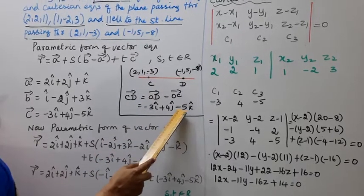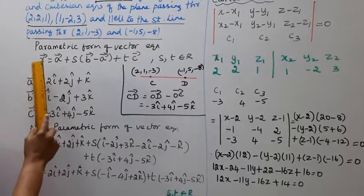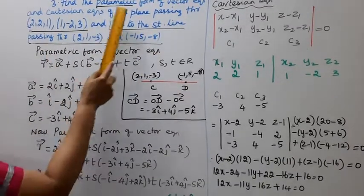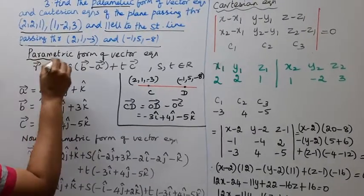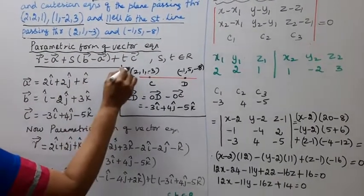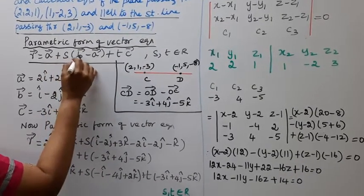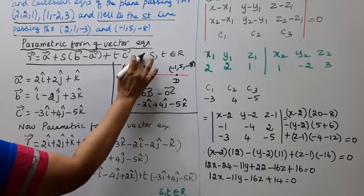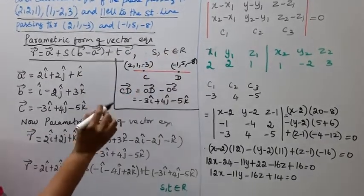So CD vector is minus 3i cap plus 4j cap minus 5k cap. The parametric form of vector equation is: R vector equals a vector plus s into (b vector minus a vector) plus t into c vector, where s and t are scalars belonging to R.